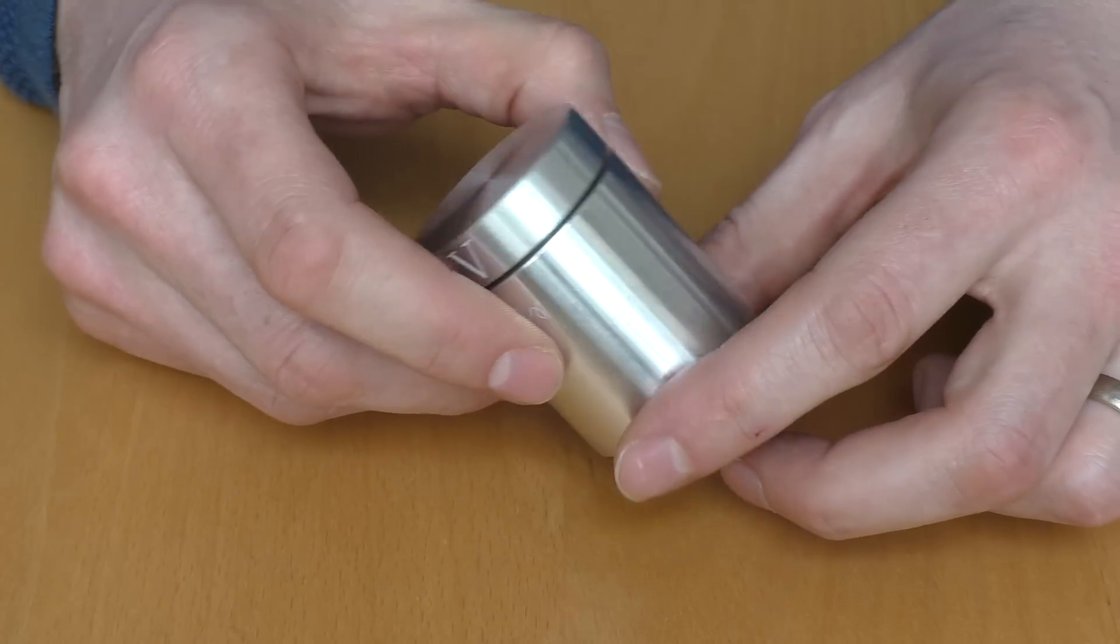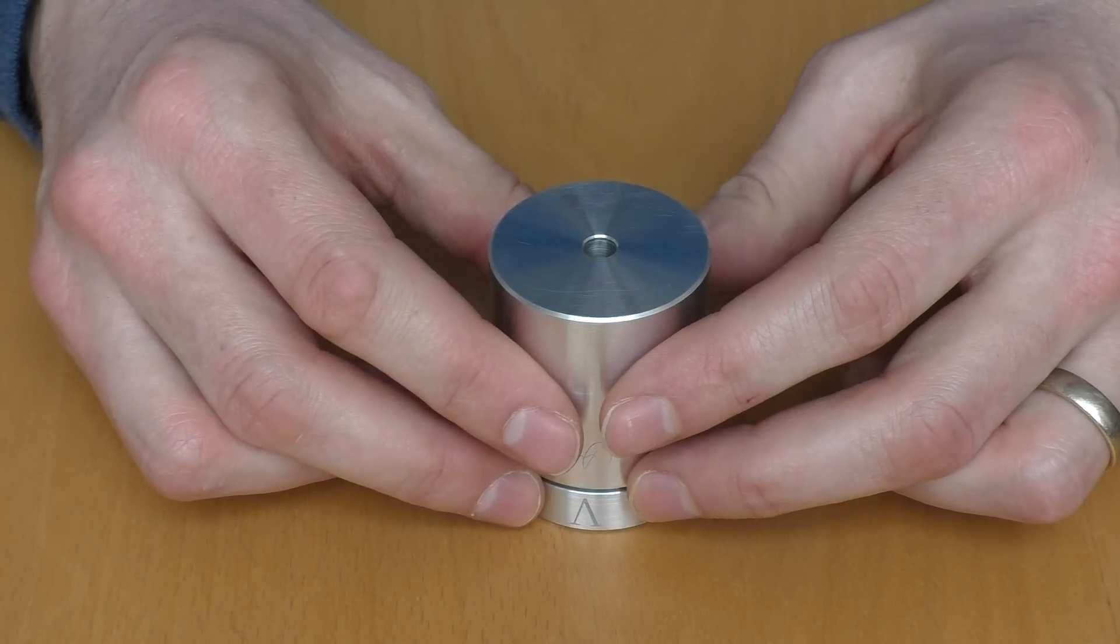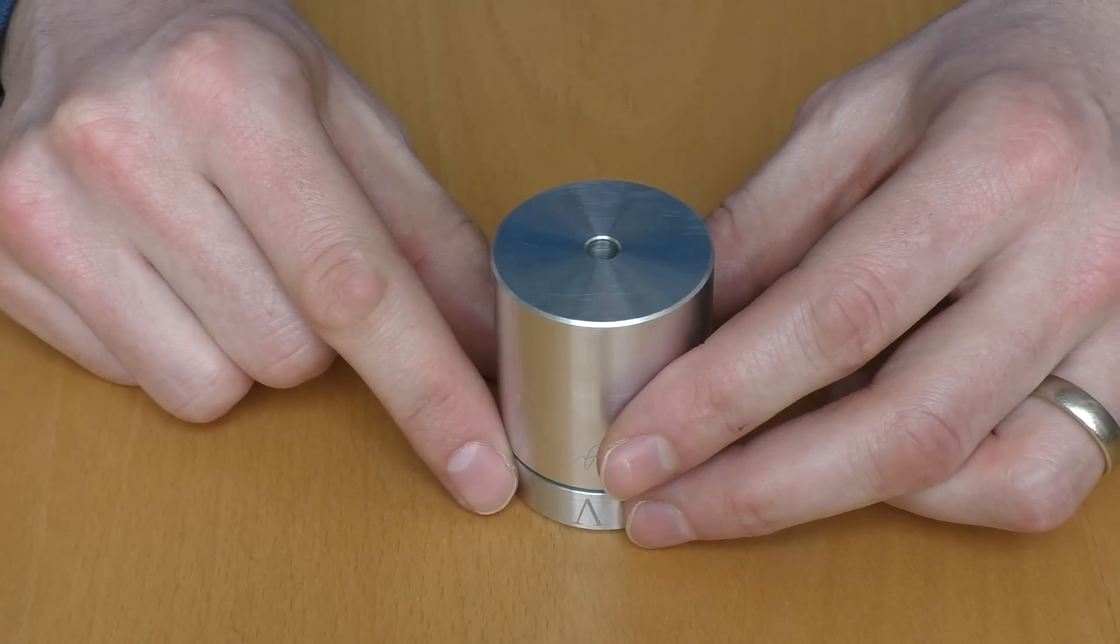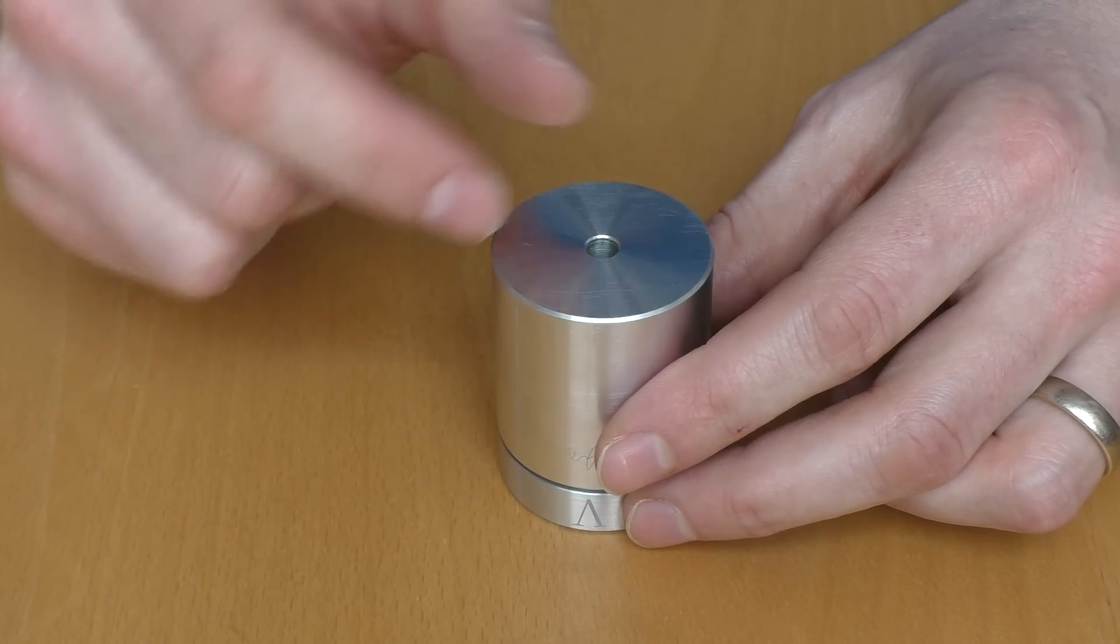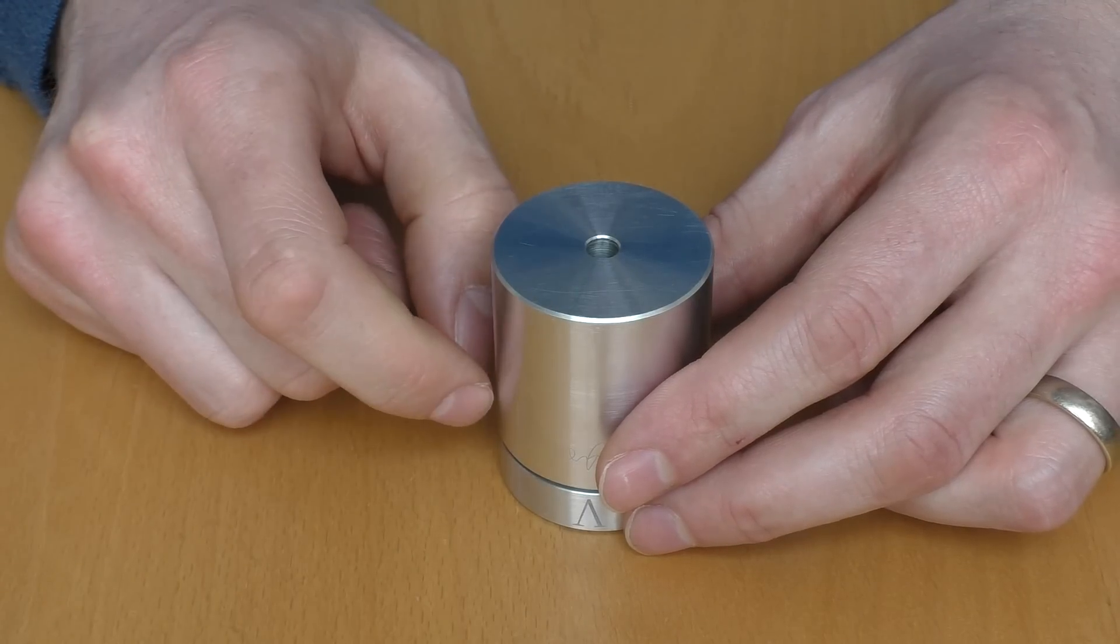Also, when you turn the puzzle around, you can see that there is a hole on the bottom that enables you to have a look inside of the puzzle. The hole, the size of the hole is specifically designed that you are not able to see too many details inside,